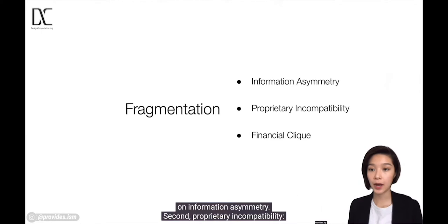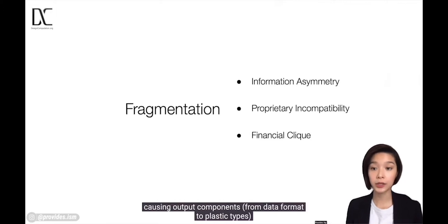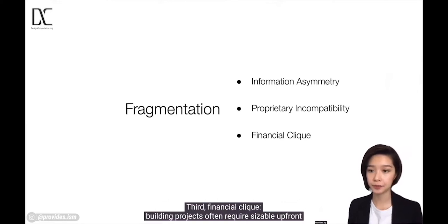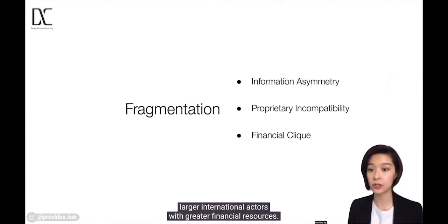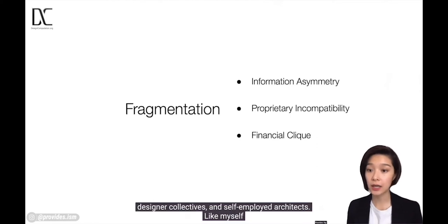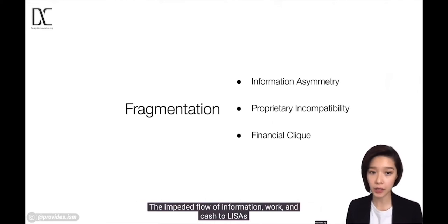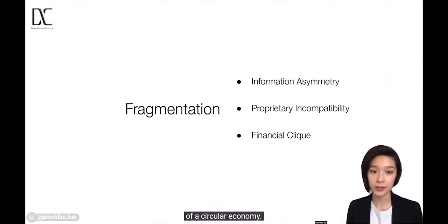Second, proprietary incompatibility. Technologies are being designed to work in silos, causing output components from data format to plastic types to be incompatible and take extra energy to recycle. Third, financial clique. Building projects often require sizable upfront capitals, and complex contracts are generally trusted to larger international actors with greater financial resources. This results in the marginalization of leases such as small-medium enterprises, designer collectives, and self-employed architects. The impeded flow of information, work, and cash to leases limits the distribution of resources, resulting in a small clique economy instead of a circular economy.